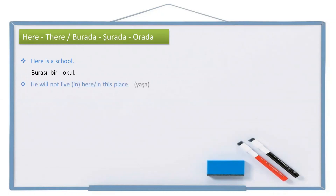Let's see another one. He will not live here — he will not live in this place. He: o. In here: burada, the locative case. Live: yaşa. Not live: yaşama. Will not live — yaşama plus -acak, but two vowels cannot be together, so a buffer letter is needed: yaşamayacak. So: o burada yaşamayacak.